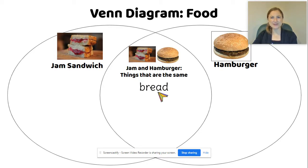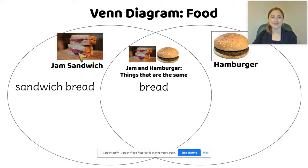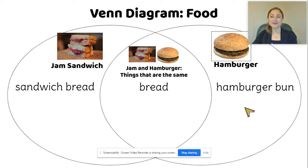But when we look at that bread, we can see that there are some differences. The jam sandwich has sandwich bread on the outside, and that's special just for the jam sandwich. And then the hamburger has a hamburger bun, and that's special just for the hamburger.